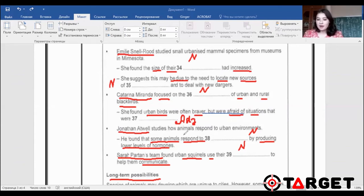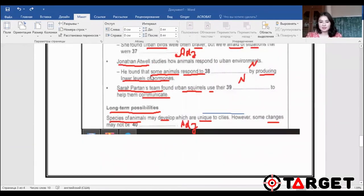Question 38, Jonathan Atwell studied how animals respond to urban environments. Again, Jonathan, I underlined Jonathan in order not to lose the link. He found that some animals respond to something by producing low levels of hormones. Keywords: animals respond, produce lower levels of hormones. And 39, Sarah Patton's team found urban squirrels use their something to help them communicate. Keywords: squirrels and communicate. And the last question finally, long term possibilities. Species of animals may develop which are unique to cities. However, some changes may not be, again adjective. Keywords: species of animals develop and changes. So now let's listen to the track.